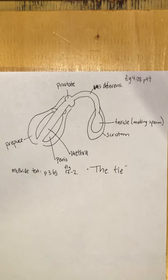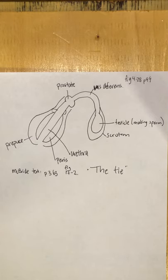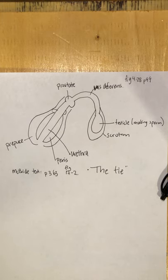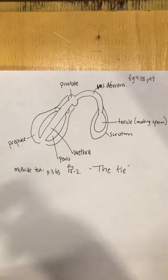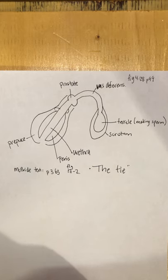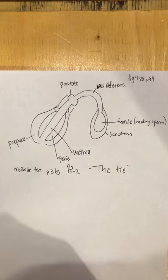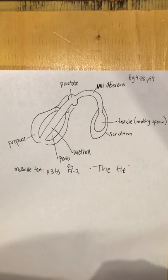That covers the male and female reproductive systems. You can read about them in the Elsevier textbook pages 98 to 103; McBride covers the reproductive systems with the urinary system in chapter 12, and the tie is in figure 17-2. There is also a review sheet available in Brightspace. If you have any questions about the reproductive system, please ask during virtual classroom or send an email — thanks so much for listening.